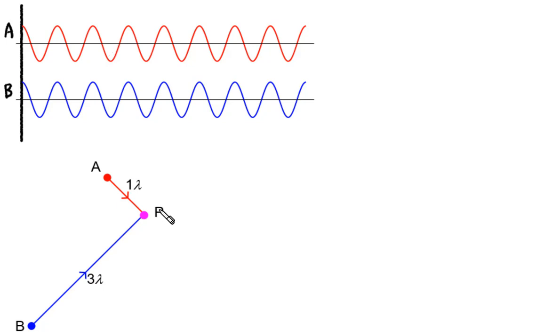Let's have a point P such that the wave from A has to travel one wavelength before it arrives at P. And the wave from B has to travel a distance of three wavelengths before it arrives at P.